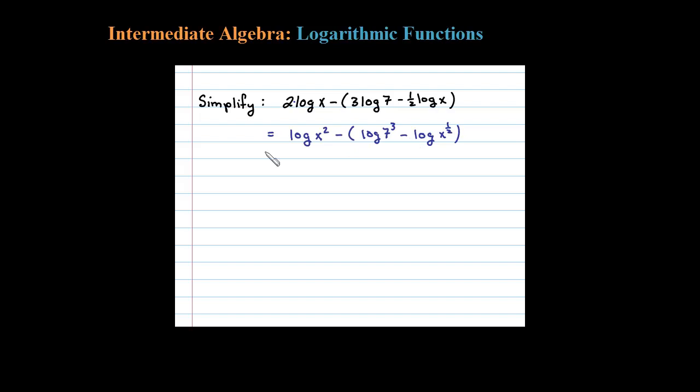Okay and then distribute that negative here would be next. So log of x squared minus log of 7 to the third power, which is a rather large number, plus log of the square root of x. x to the one half. I'm just going to rewrite that right now as the square root of x.